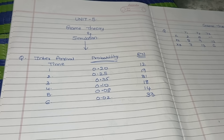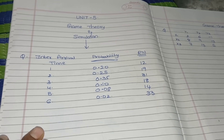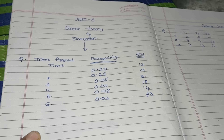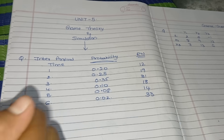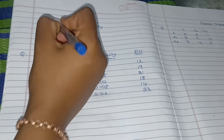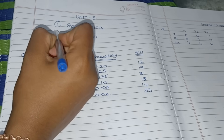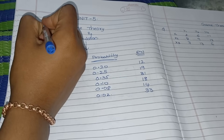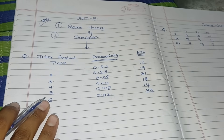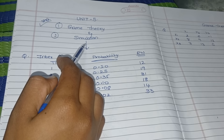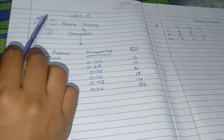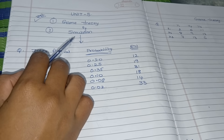Hello all, welcome back to our channel. In this video we will discuss Unit 5 of Operations Research. In this unit you are having two concepts: first one is game theory, second one is simulation. Game theory is the most important one - we can definitely expect a game theory question. Simulation is rarely asked and it is easy also, so first we will discuss simulation.